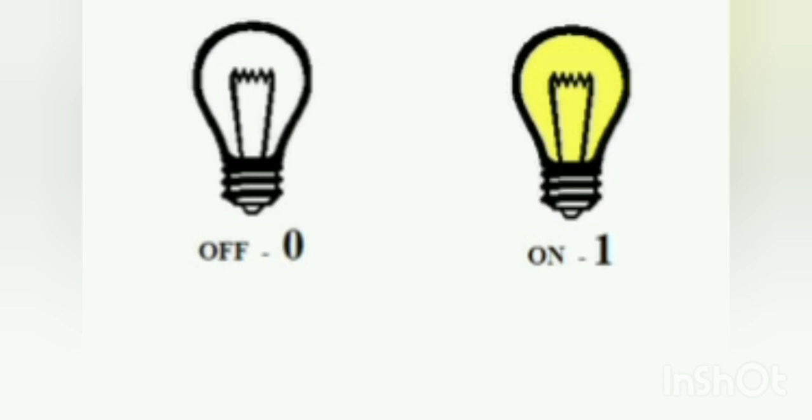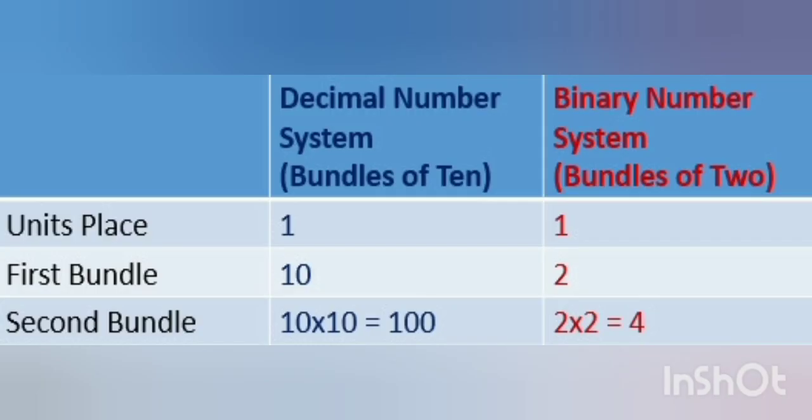How can 0 and 1 make a numbering system? Students, we learned earlier, the decimal number system is based on bundles of 10. Similarly, binary system is based on bundles of 2.